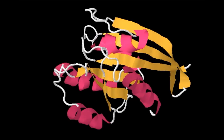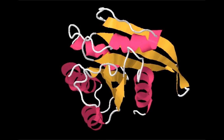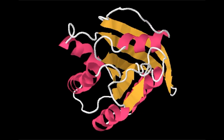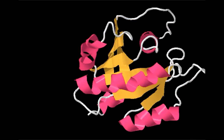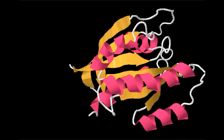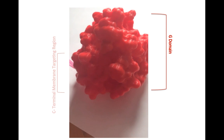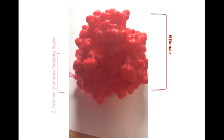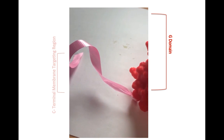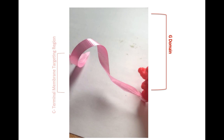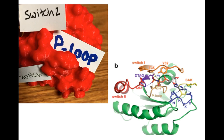RAS contains six beta strands and five alpha helices. It is composed of two domains: a G domain, where the nucleotide binding occurs, and a C-terminal membrane targeting region, which is involved in membrane specificity. We are going to mainly focus on the G domain, as it is currently the main focus of research efforts given its biological implications.